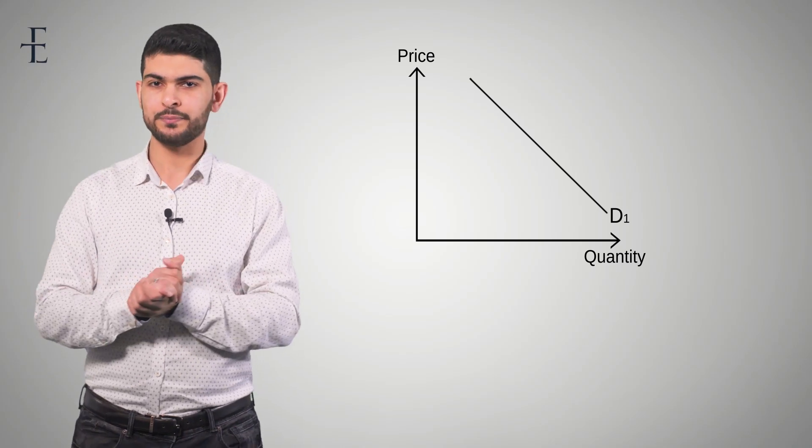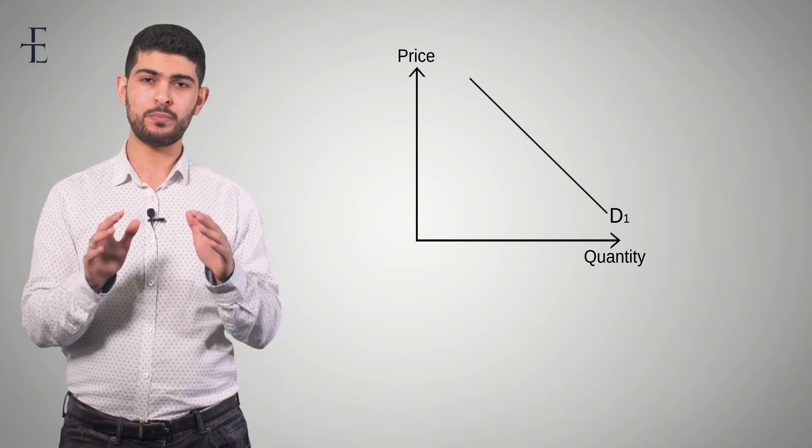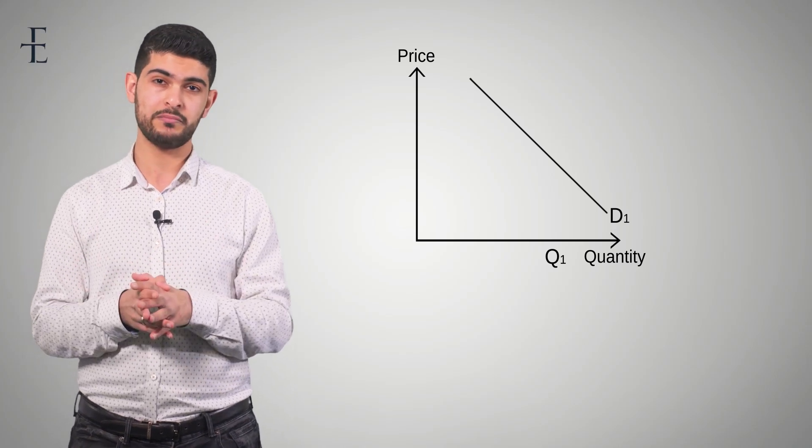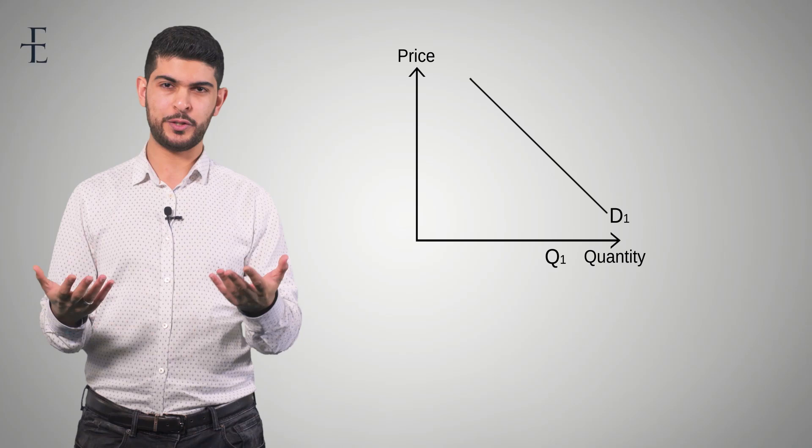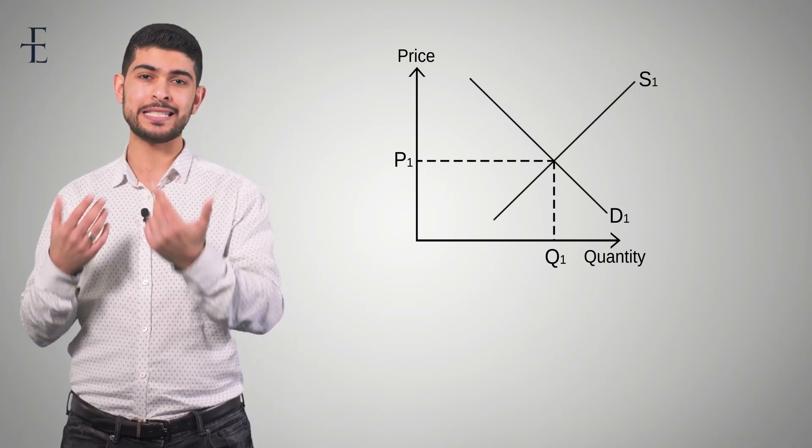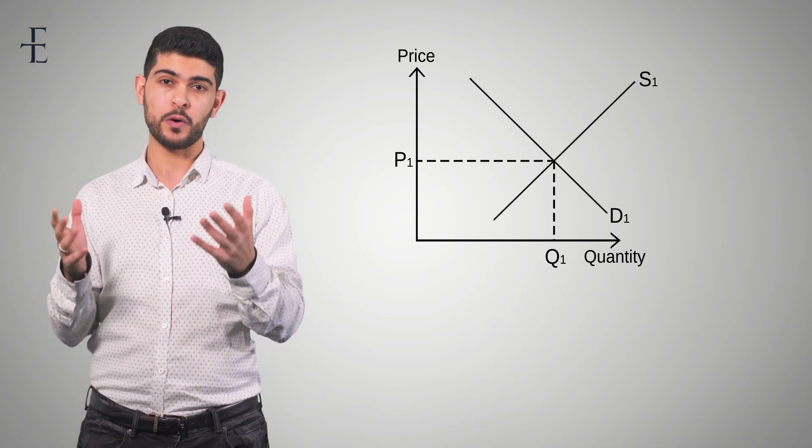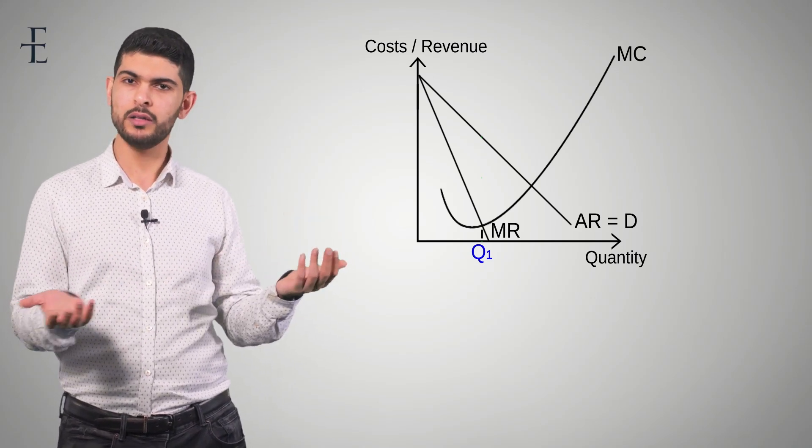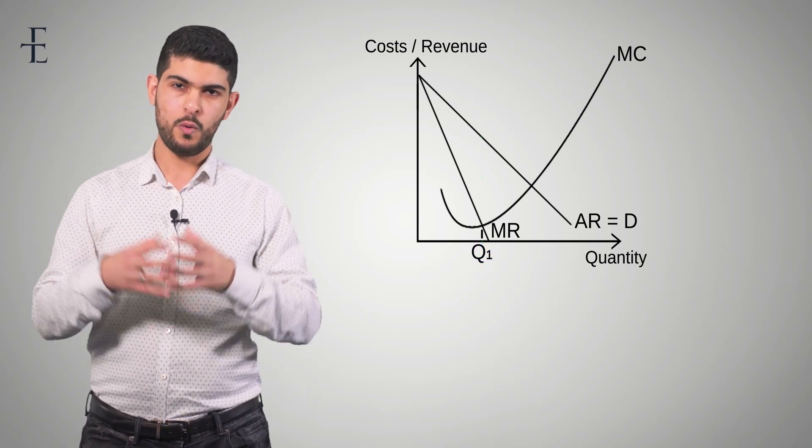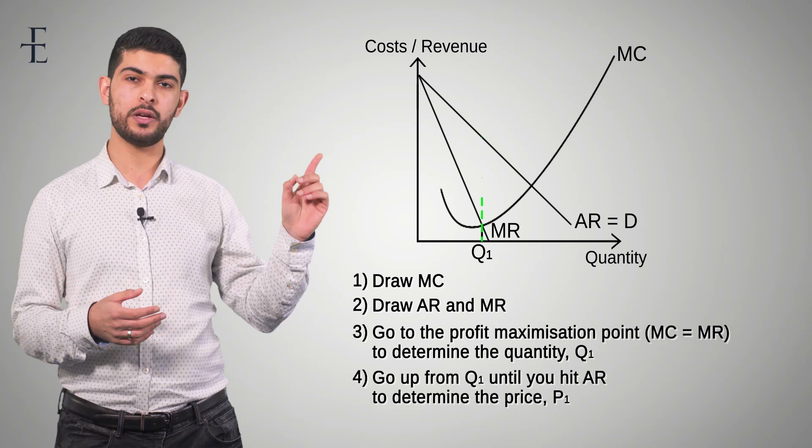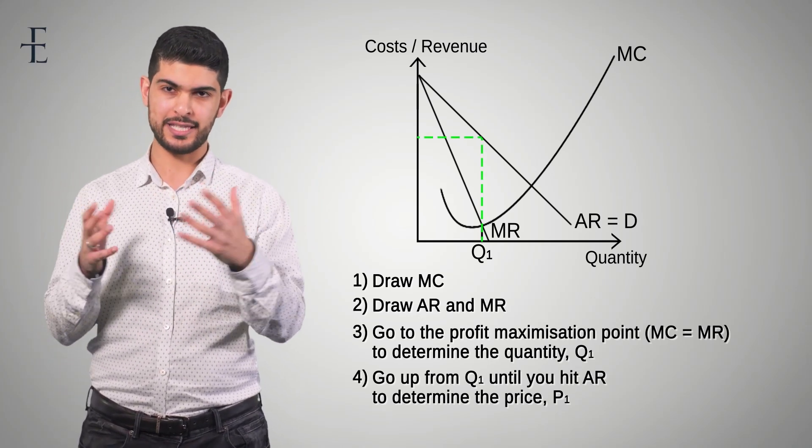Now, let's just go on a quick tangent really quickly. If I were to draw you a demand curve over here, and I said to you with absolute 100% certainty that this was the quantity that we're producing, is it possible or impossible for you to tell me what the price is? Well, it's possible. All you have to do is you dot up until you hit the demand curve and dot across to get the price. Let's go back to this diagram then. Do you know the quantity? Yeah, the quantity is where MC equals MR, Q1. Do you have a demand curve? Well, we know that the average revenue curve is the demand curve. So step four is dot up from Q1 until you hit the AR curve, dot across. That is your price.